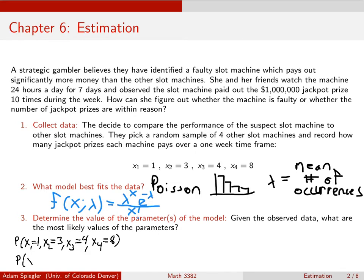This would be the same thing as saying, what's the probability that X1 is 1 times the probability that X2 is 3 times the probability that X3 is 4 times the probability that X4 is 8. We assumed that each of these machines, each of these observations, was independent of the other, so we could just multiply each of those values.